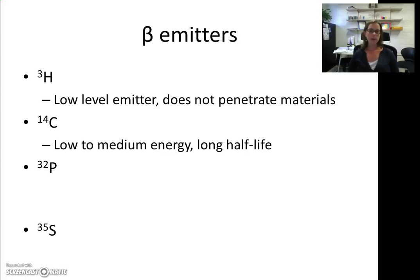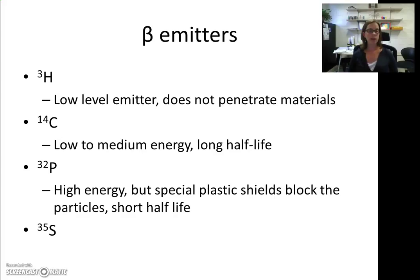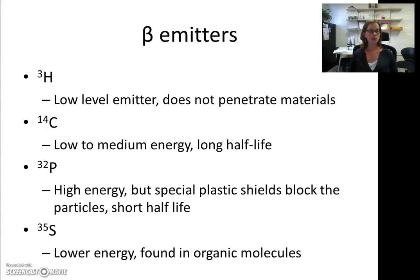C-14 has low to medium energy and a long half-life. You may have heard of C-14 in carbon dating — the ratio of C-14 to C-12 can be measured and used to determine the age of old bones and other buried materials. P-32 is a very high energy beta emitter, but simple plastic shields can block its particles, so it's fairly easy to work with if you're careful. It has a relatively short half-life of just a couple of weeks. Finally, S-35 is a low energy emitter found in organic molecules and can also be used for various dating procedures.